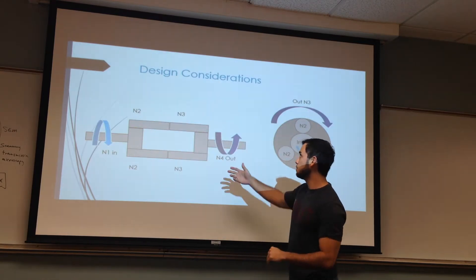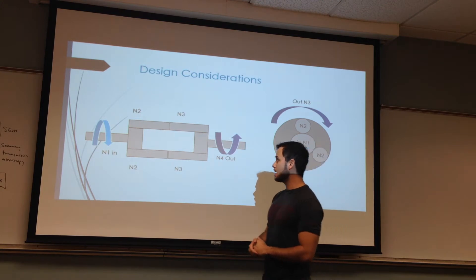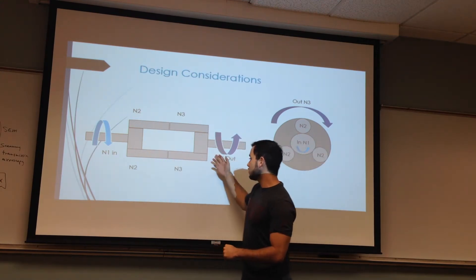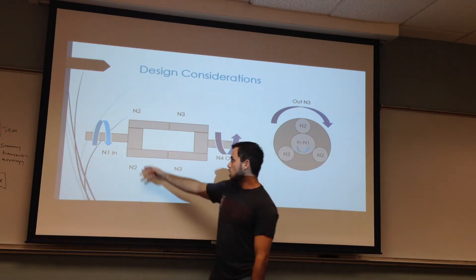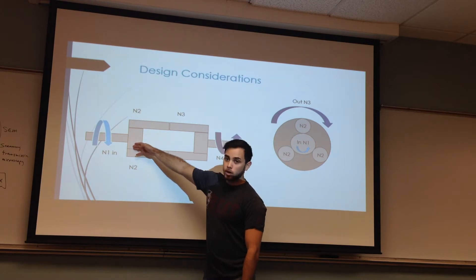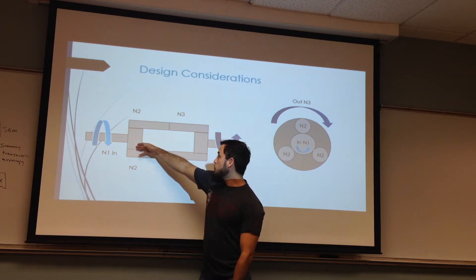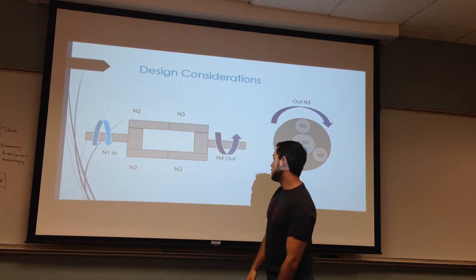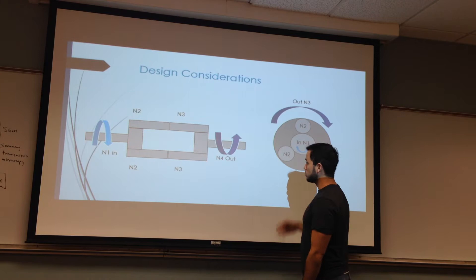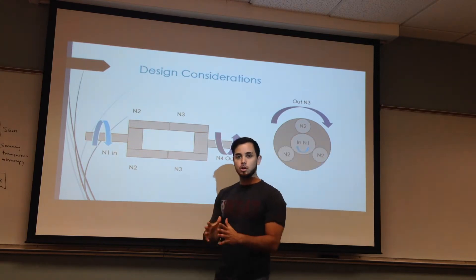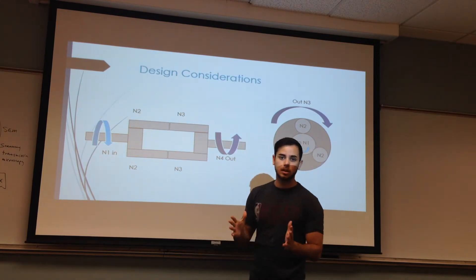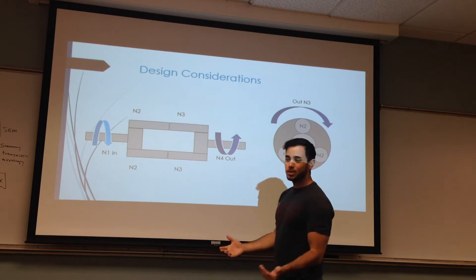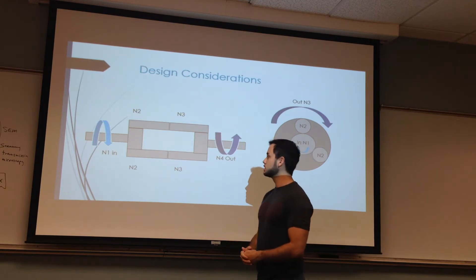The first design consideration we had was a gear chain, as you see there, which would have involved bevel gears at the beginning and at the end. But we decided to go with the planetary gear system because it makes it more compact, which was one of the requirements, and also it uses fewer gears.